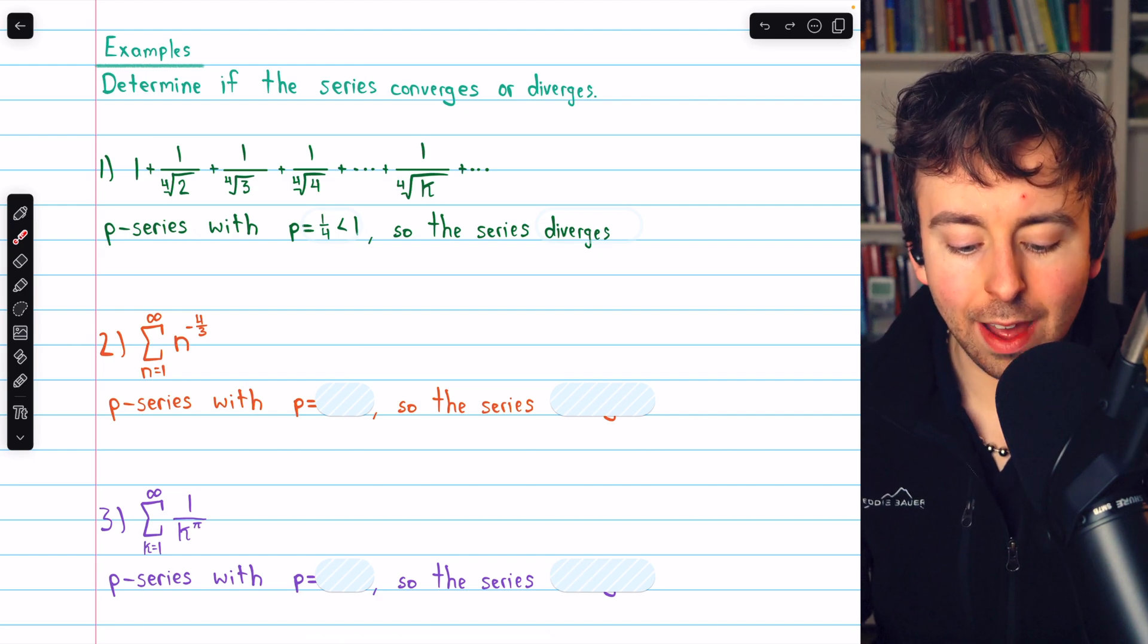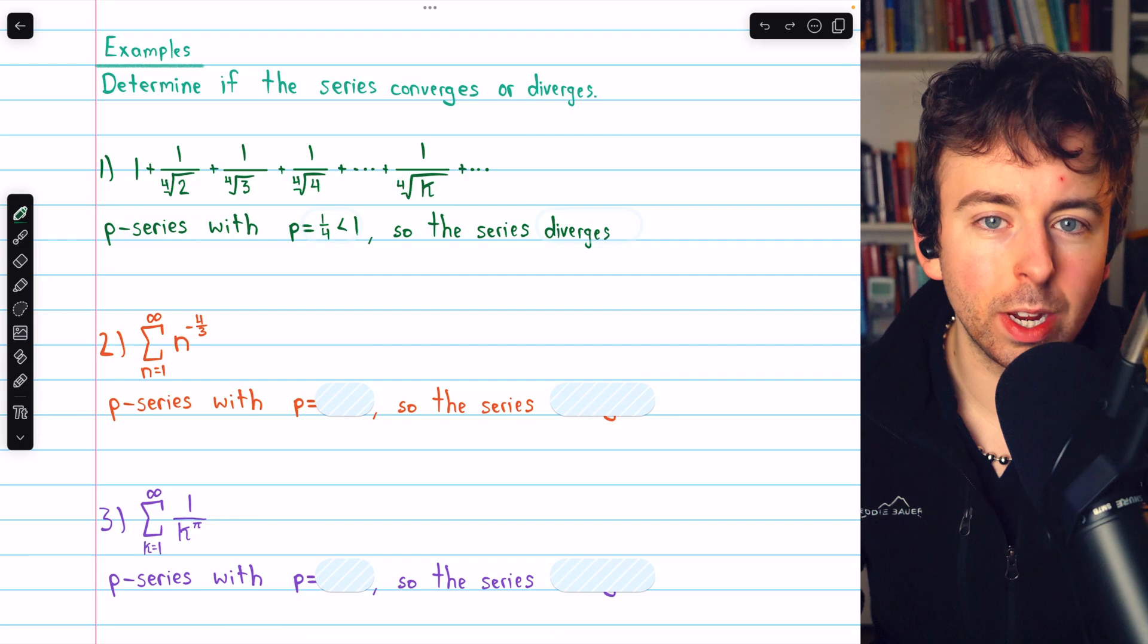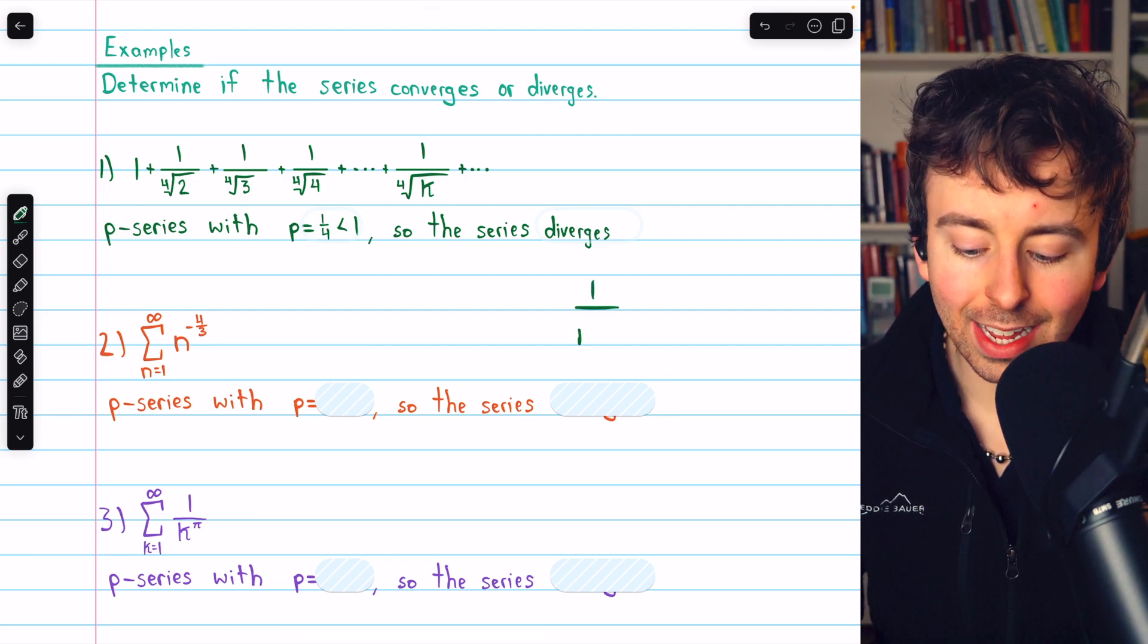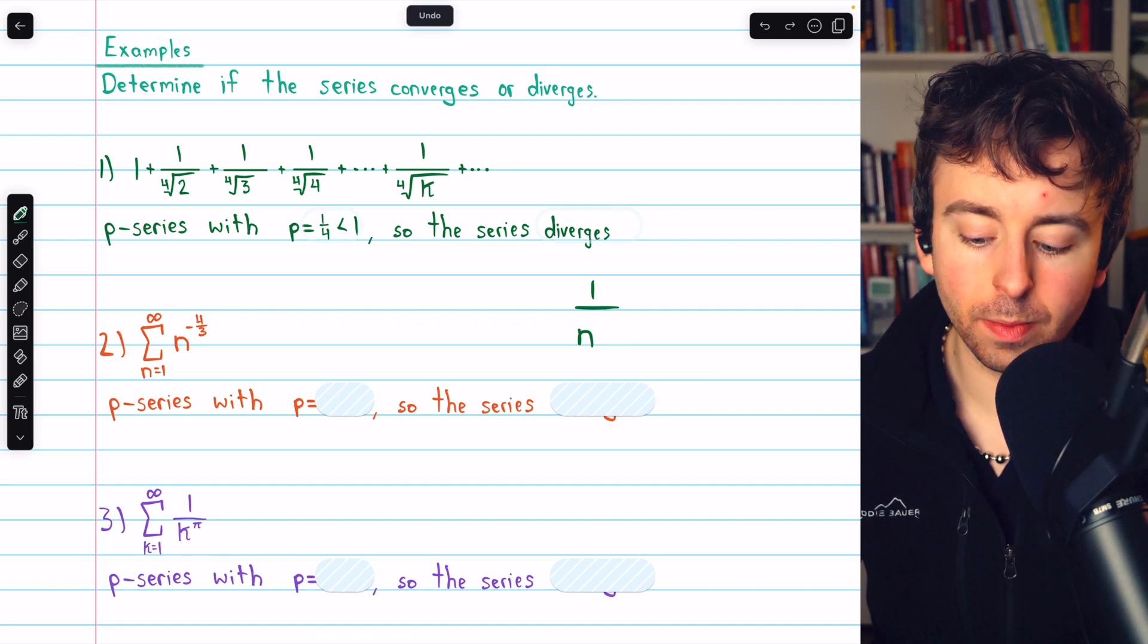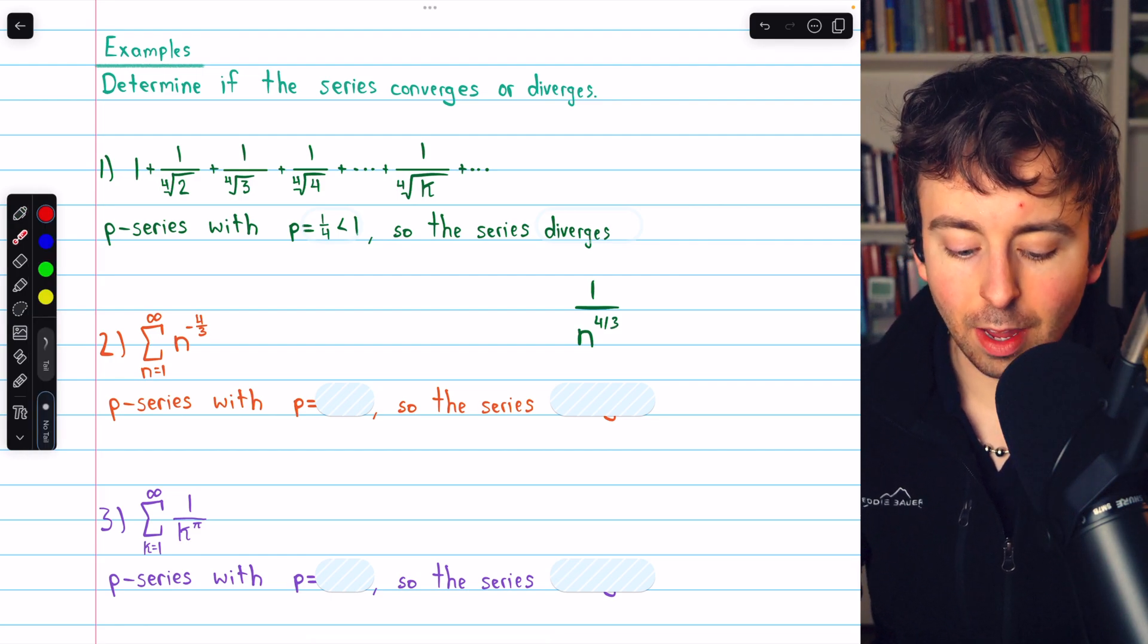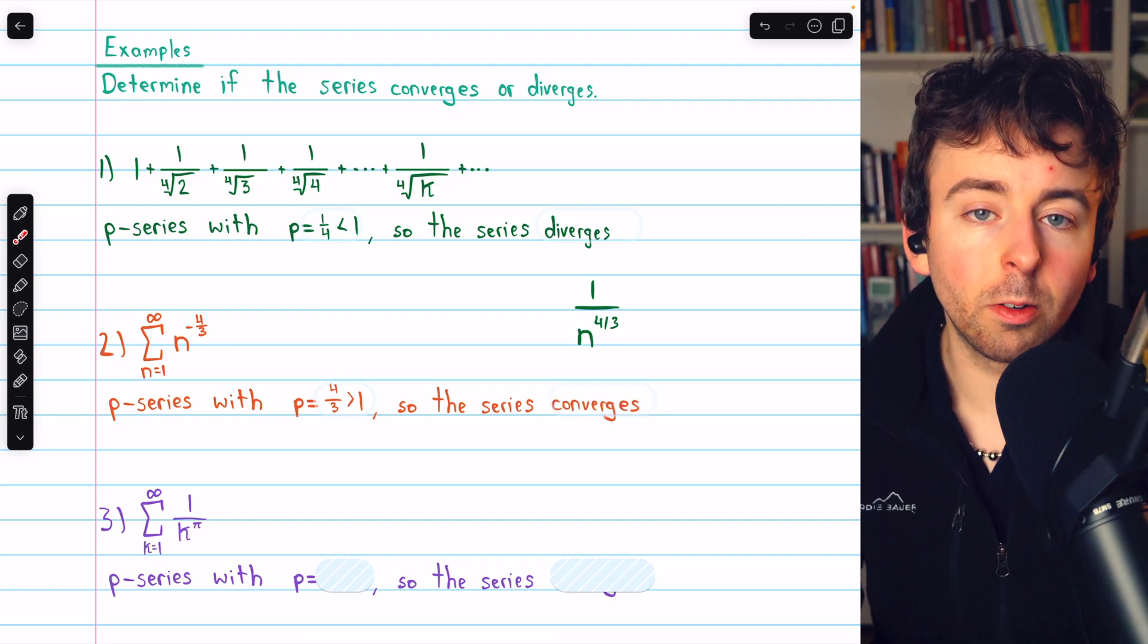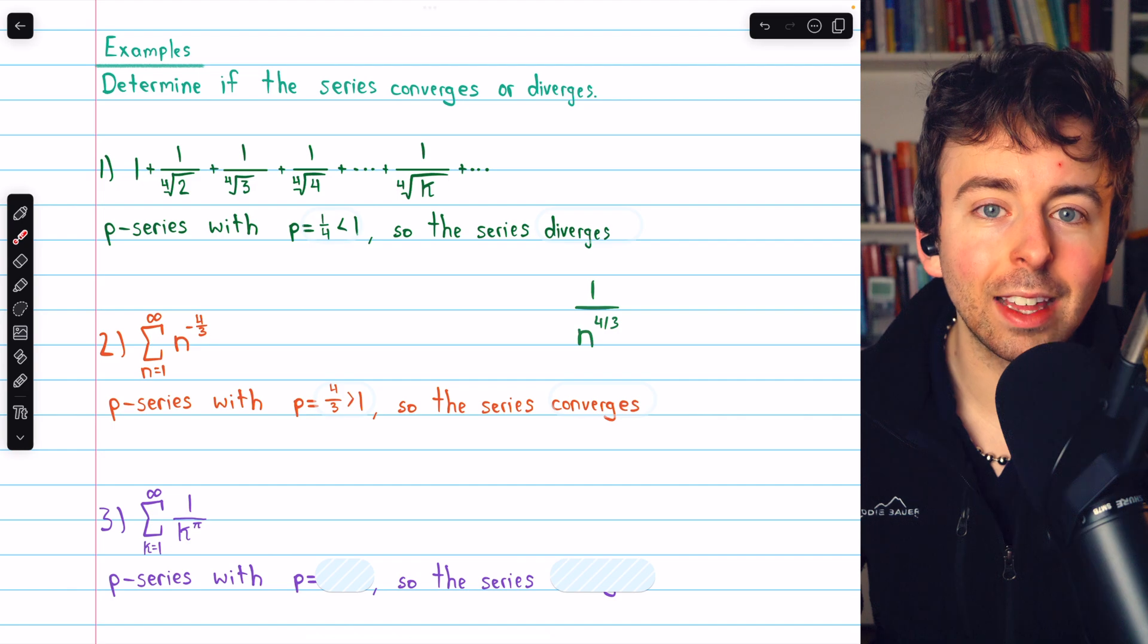In example two, we have a p value of positive 4 over 3. Remember that the value of p is the power of n in the denominator. So in this case, we see it with a negative exponent. If we move it to the denominator, it has a positive exponent of 4 over 3. Since this is a p-series with p equal to 4 thirds, which is greater than 1, this series will converge. The terms are getting quite small, quite fast.